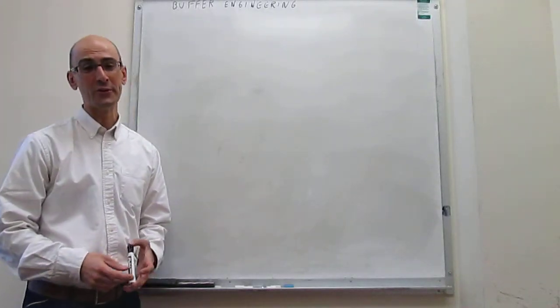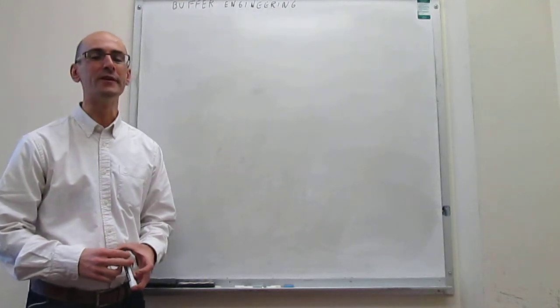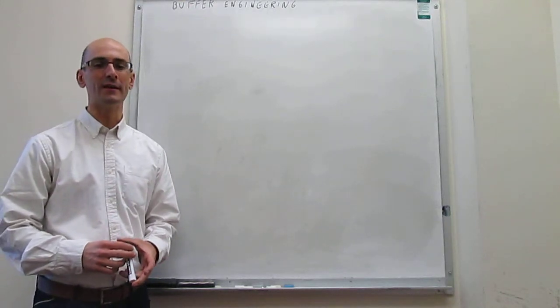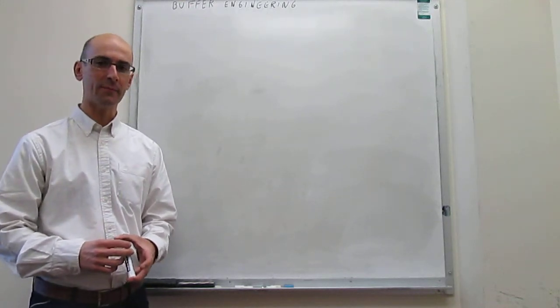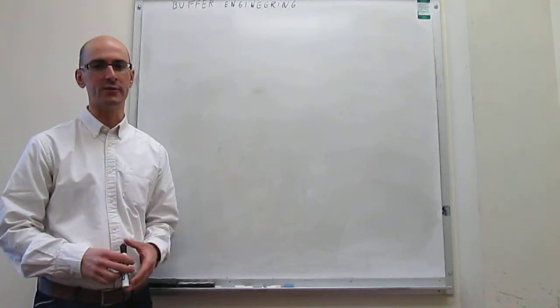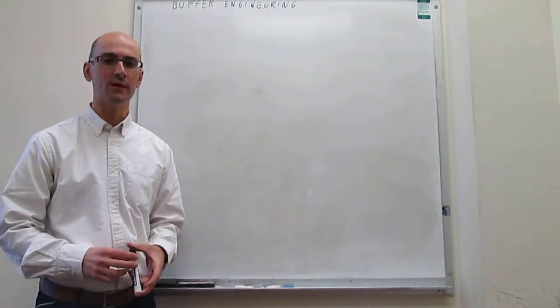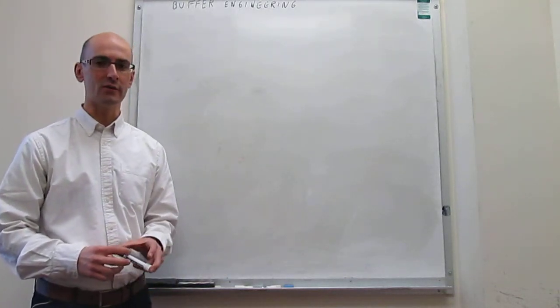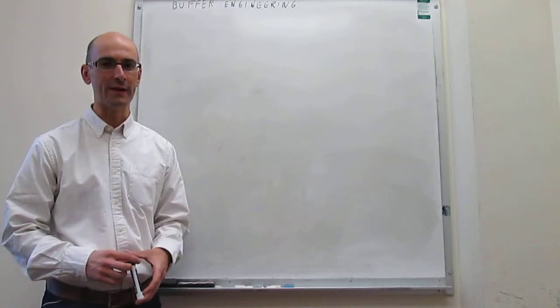In this video we're going to learn how to generate a buffer by producing the conjugate pair of either a weak acid or a weak base in situ by addition of either strong acid or strong base.